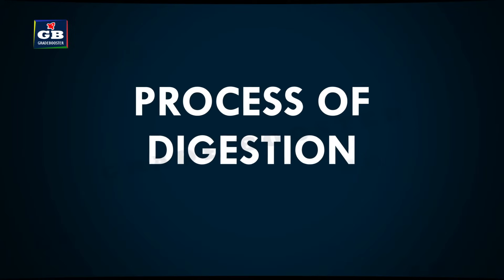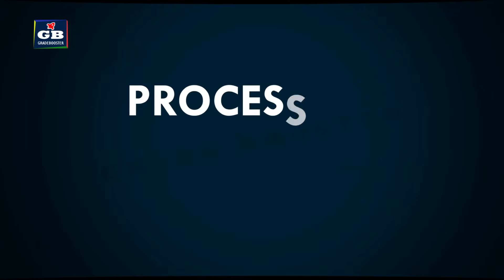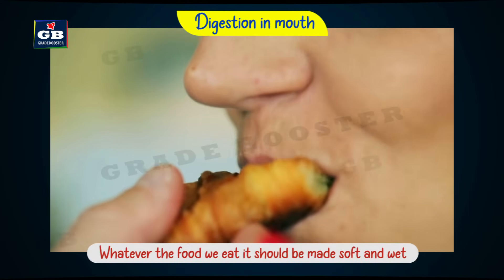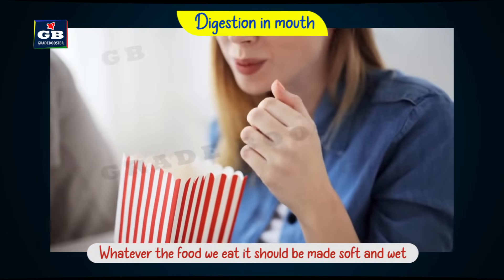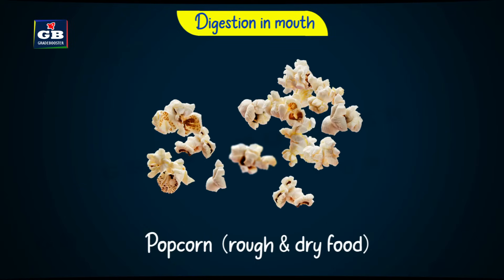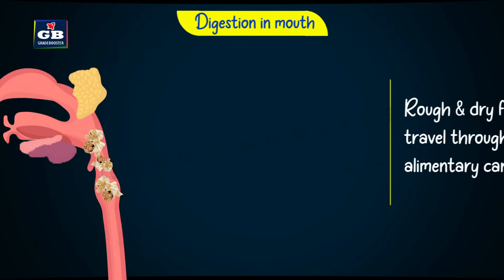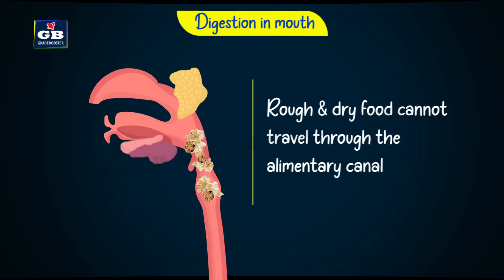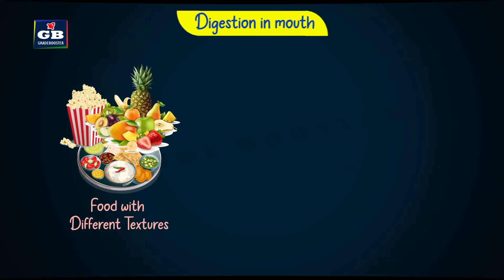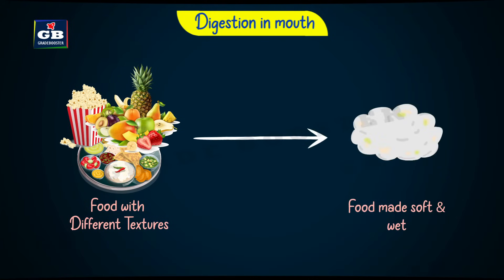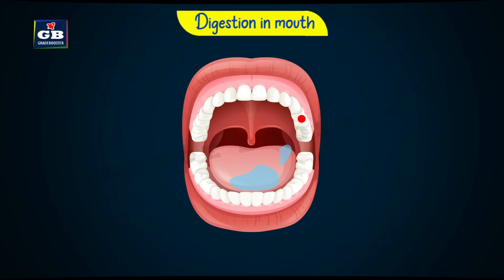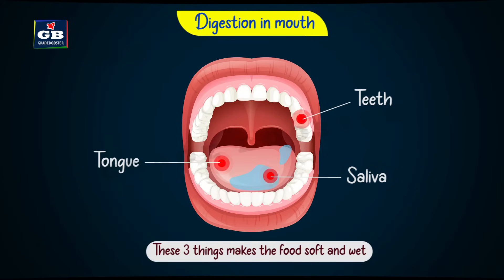Now, let us see the process of digestion. Whatever food we eat, it should be made soft and wet because if it is rough and dry, it cannot easily travel through the alimentary canal. So, whatever food we eat, it should be made soft and wet before swallowing. Who does this job? The teeth, saliva, and tongue.